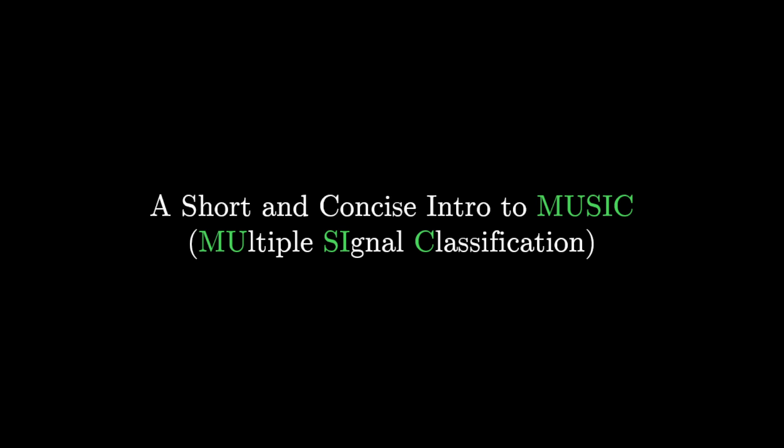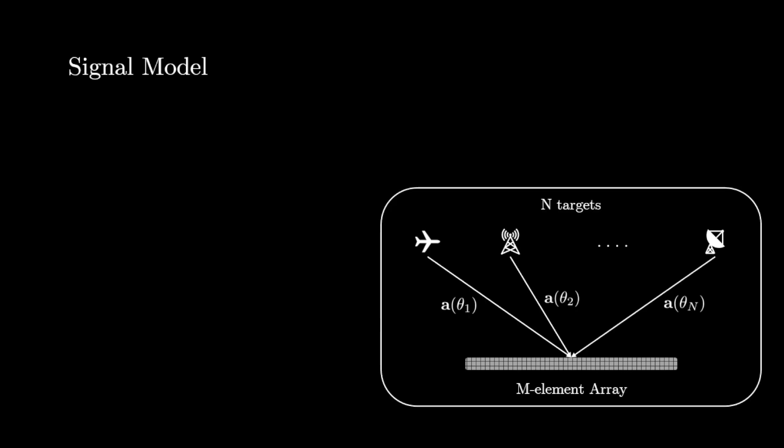This is a short and concise intro to MUSIC, which is Multiple Signal Classification. To do that we begin with the signal model. We have an M-element uniform linear array — it doesn't have to be a linear array of course — and there are N targets.